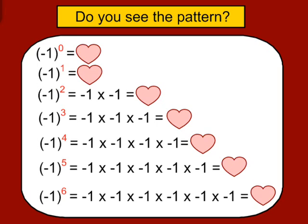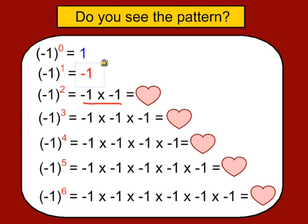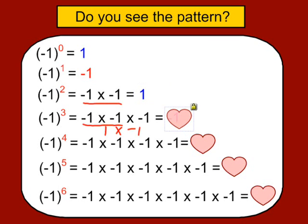Let's see if we can figure out a pattern. Anything to the zero power is just one. Negative one to the first power — anything to the first power is just that number — is negative one. Negative one to the second power would be negative one times itself twice, and a negative times a negative would be a positive one.